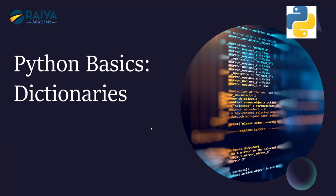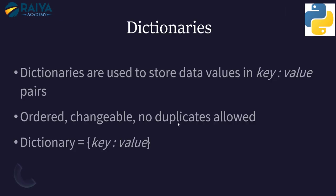Another data type in Python that we learned today is a dictionary. We've talked about lists, tuples, and sets. Dictionaries are used to store data values as pairs — you have a key and a value, written with curly brackets. A few things to remember: dictionaries are ordered, changeable, and no duplicates are allowed.